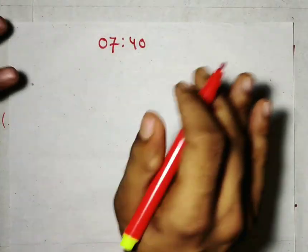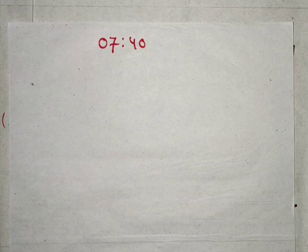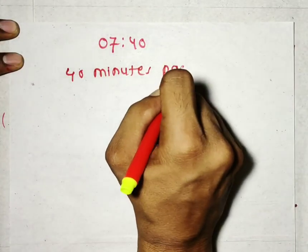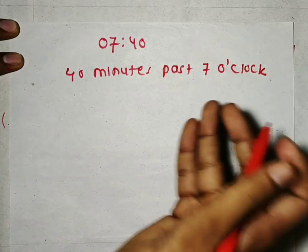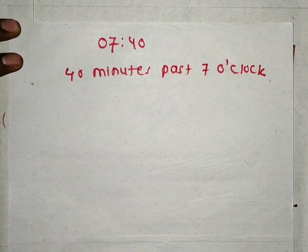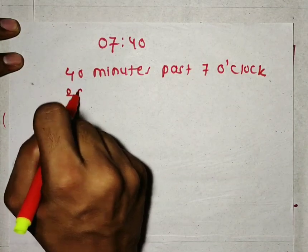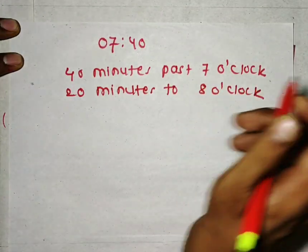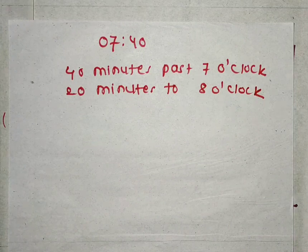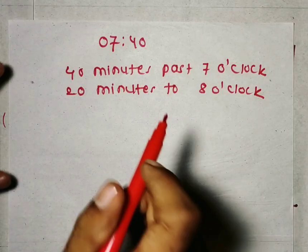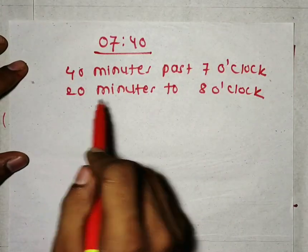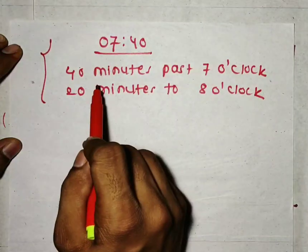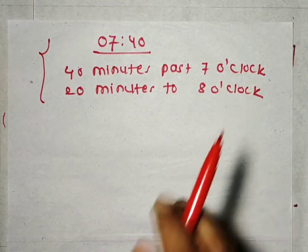Now we have to see how to read the time. If it is written as 7:40, we know it is 7:40. But you can also read it as '40 minutes past 7 o'clock' or '20 minutes to 8 o'clock.' So in a question, if someone asks you at '40 minutes past 7 o'clock' it simply means 7:40, and '20 minutes to 8 o'clock' also means 7:40. The meaning of all three expressions is the same.